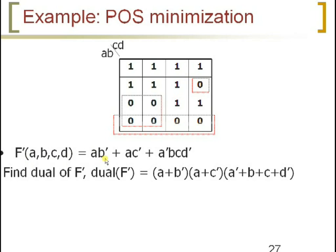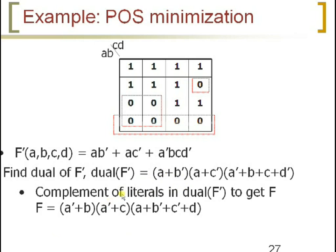Now we have to find the duality of F-complement. Replace all ANDs with OR and ORs with AND. Substituting those gives us an intermediate expression, and then complementing the function — F-complement whole complement — gives us the final expression F.